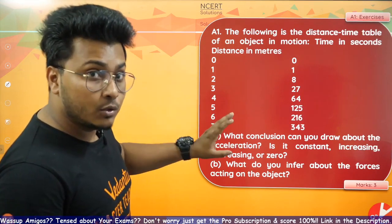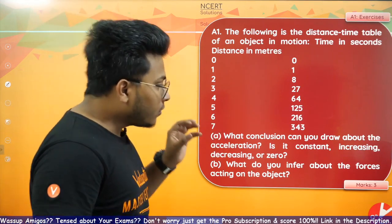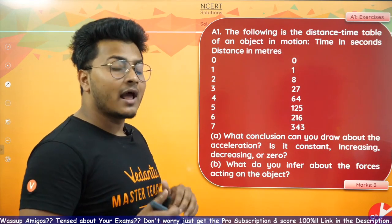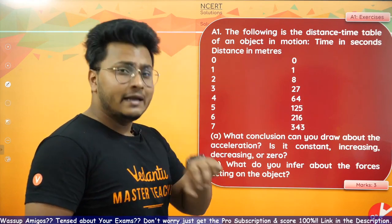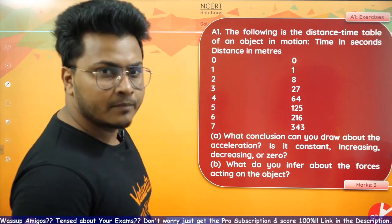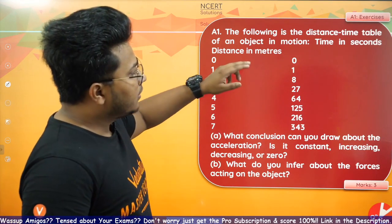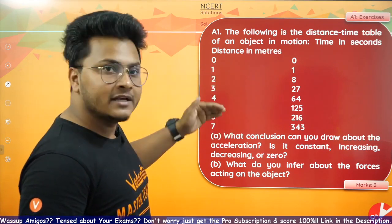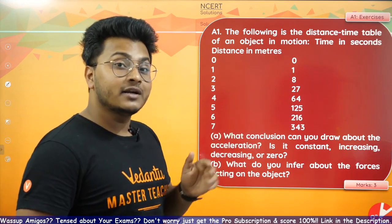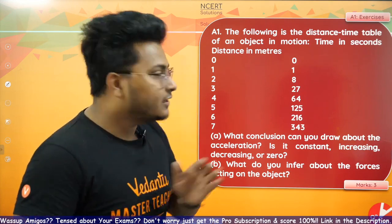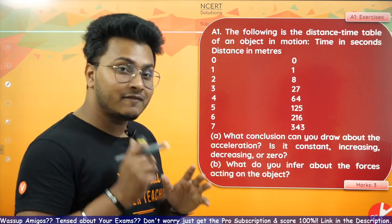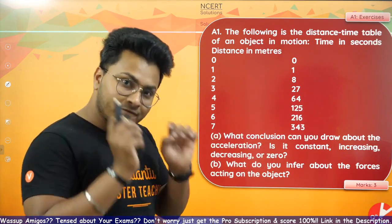Based on this table, you have to find the conclusion about acceleration — is the object accelerating or not? Constant acceleration or not? As you can see, time increases second by second and the distance covered by the object is increasing, but not uniformly. In one second it was one meter, in the second second eight meters, in the third second twenty-seven meters — so this is definitely not uniform motion. The object is definitely accelerating.